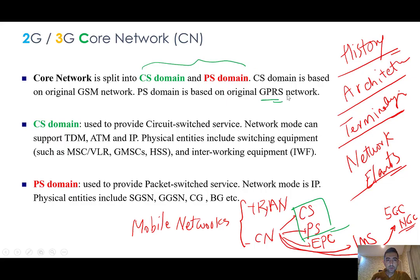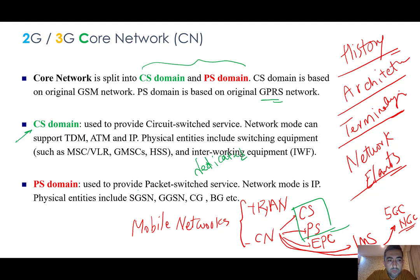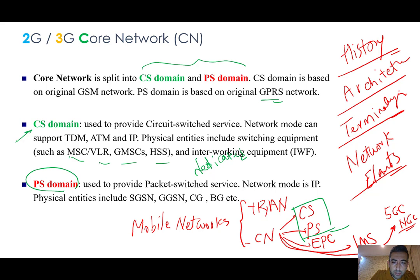So in the CS domain, before data communication we must establish a dedicated channel or circuit, while in the PS domain we don't need that. For the CS domain: it is used to provide circuit switch services, the network mode can support TDM, ATM, and IP, and physical entities include switching equipment such as MSC, VLR, GMSC, HSS, and so on — we'll discuss them in detail later — plus interworking functions. For the PS domain: it is used to provide packet switch services, the network mode is IP, and physical entities include SGSN, GGSN, Charging AP, Border AP, and others.